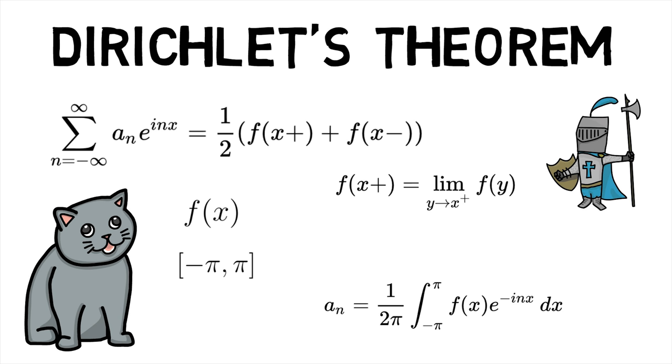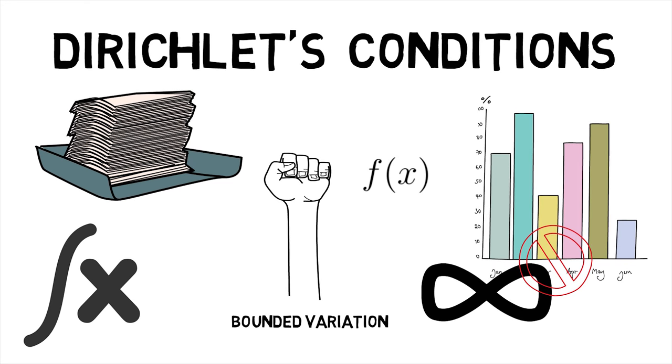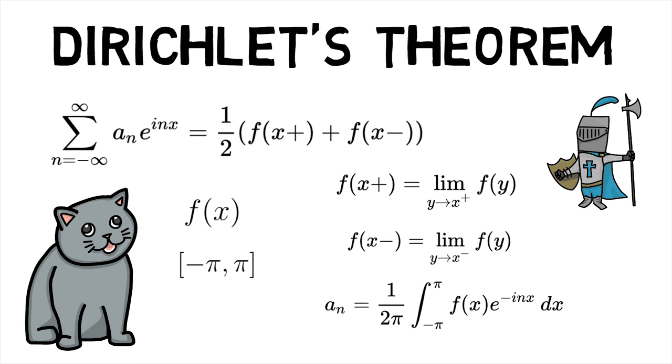Here, x+ and x- denote the right and left limits of f respectively. Hence, we first saw what Dirichlet's conditions are, and then went on to see what Dirichlet's theorem is.